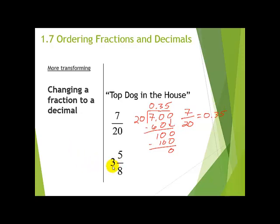The next one is a mixed number: 3 and 5 eighths. A couple of different ways you could do this — you could take the 3 and put it off to the side and just deal with the decimal of 5/8. I'm going to show you how we change a mixed number to a fraction using the mad face, because that's going to help us when we add, subtract, multiply, and divide.